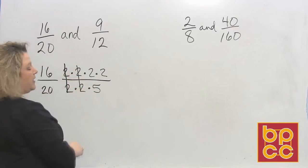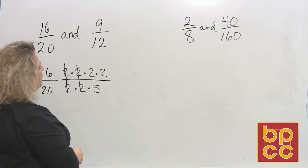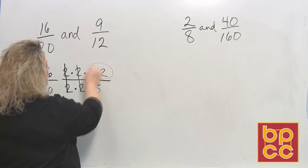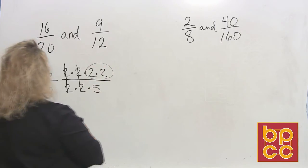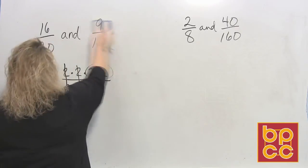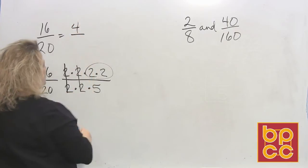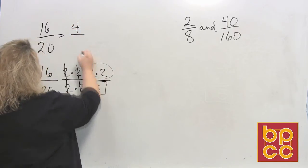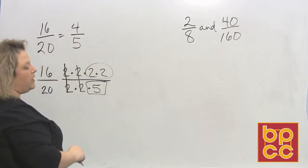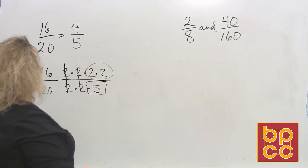So when I reduce 16 over 20, there are 2 groups of 2 that I can divide out and then what's left over would be 2 2 2's at the top which would make 4. So let me write this off to the side and 20 has nothing but a 5 left over. So 16 over 20 reduces to the fraction 4 fifths.